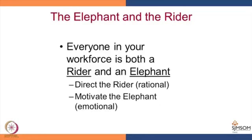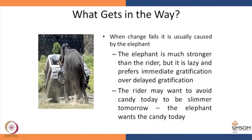Why do most changes fail? Because the rider says something and the elephant is not willing to follow. The emotional elephant does not follow because it is not motivated. Everyone in our workforce is both a rider and an elephant. Riders direct; elephants have to be motivated. Most changes fail because the elephant is not sufficiently motivated. The elephant is much stronger than the rider, but it is lazy and prefers immediate gratification over delayed gratification. The rider may want to avoid candy today to be slimmer tomorrow, but the elephant wants the candy today.